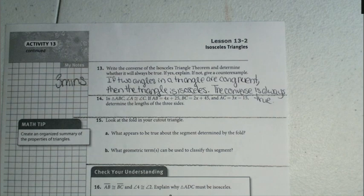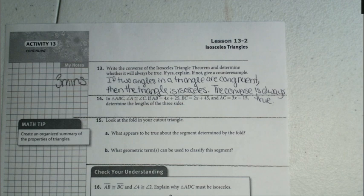All right, our converse would state: if two angles in a triangle are congruent, then the triangle is isosceles. The converse is always true. On to the next set of questions.